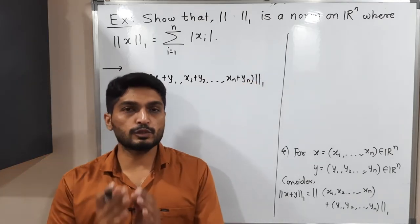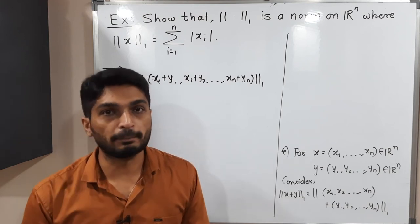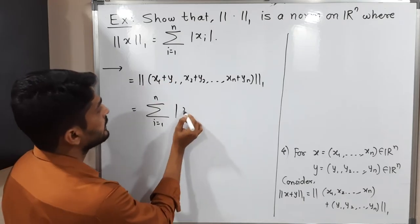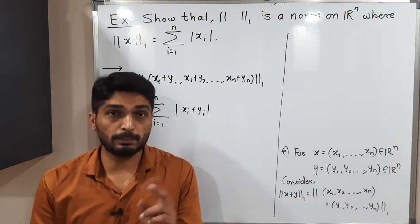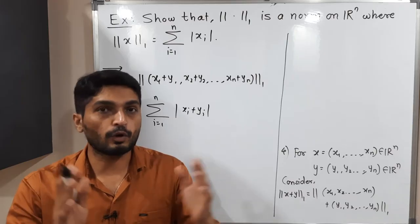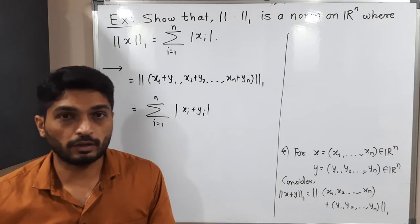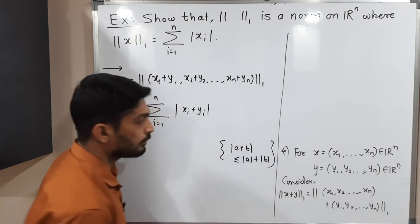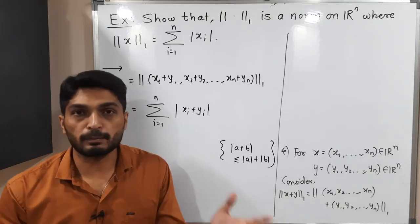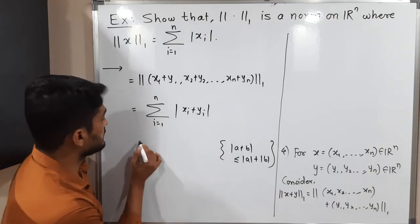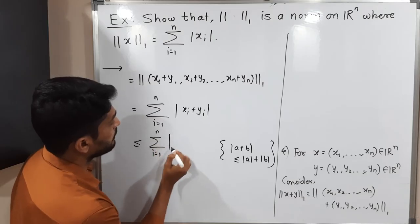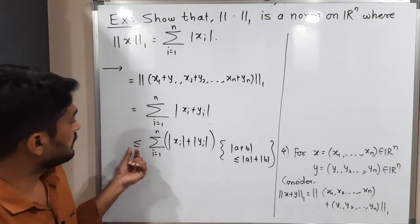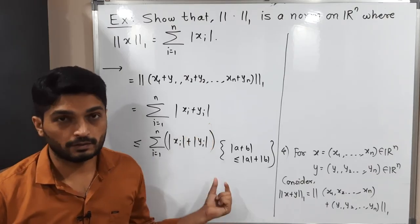By definition of norm 1, norm₁(x + y) = ∑|xᵢ + yᵢ| from i=1 to n. We know the triangle inequality for real numbers: |a + b| ≤ |a| + |b|. Applying this here, ∑|xᵢ + yᵢ| ≤ ∑(|xᵢ| + |yᵢ|).